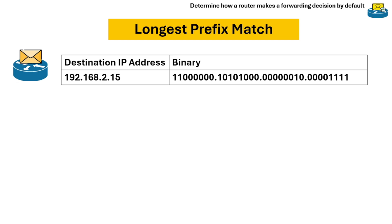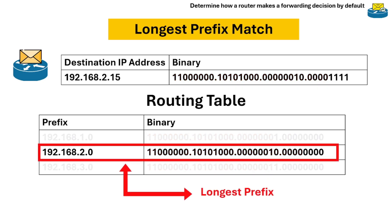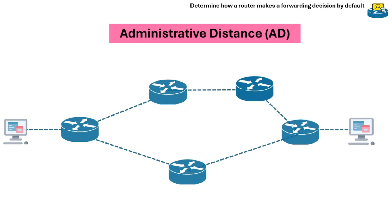The more specific the network, the higher the priority, regardless of AD or metric. For example, if the router receives an IP packet with destination 192.168.2.15, in binary the IP address looks like this, and the router has the following prefixes in its routing table. The router chooses the prefix that matches the most bits — this is our longest prefix for this destination.